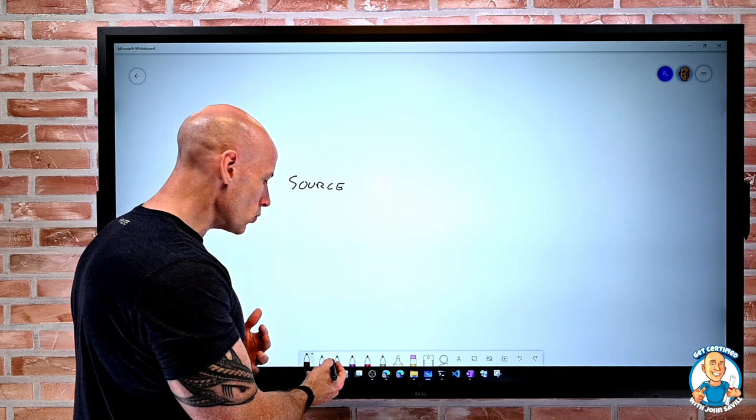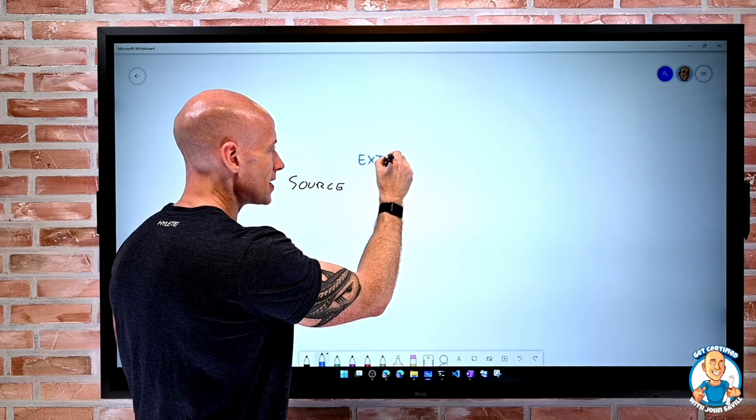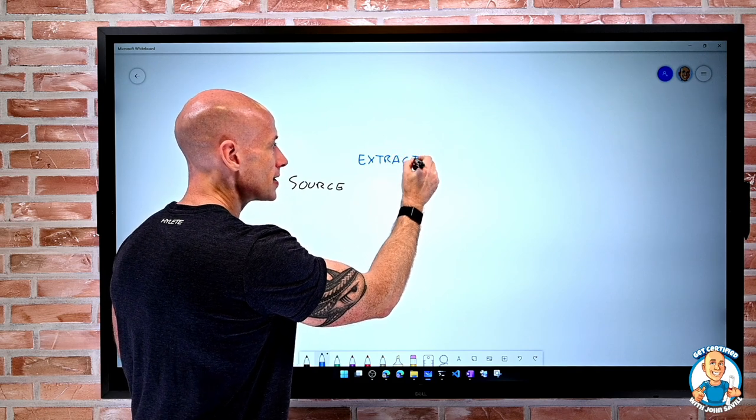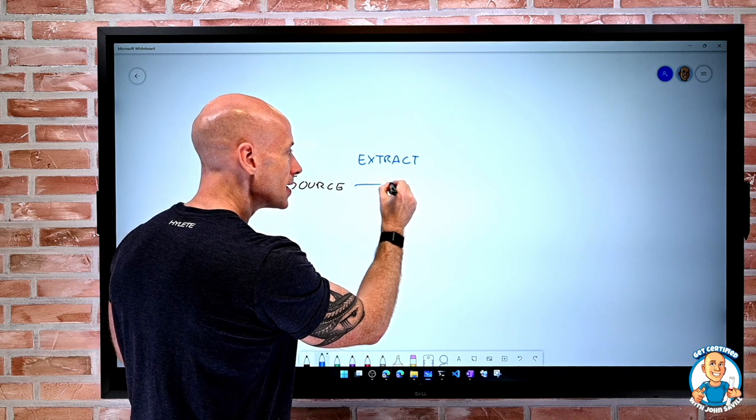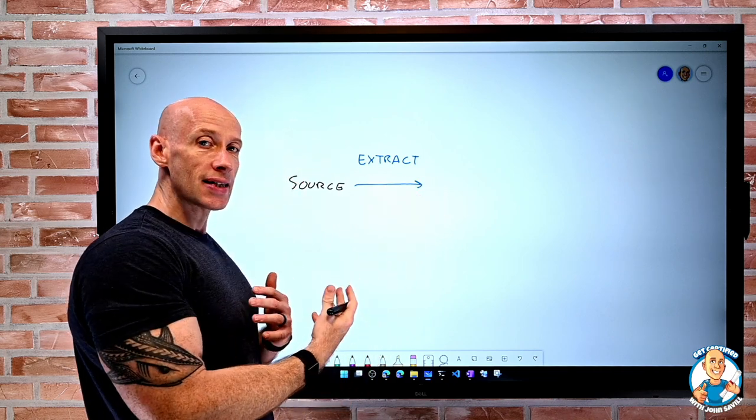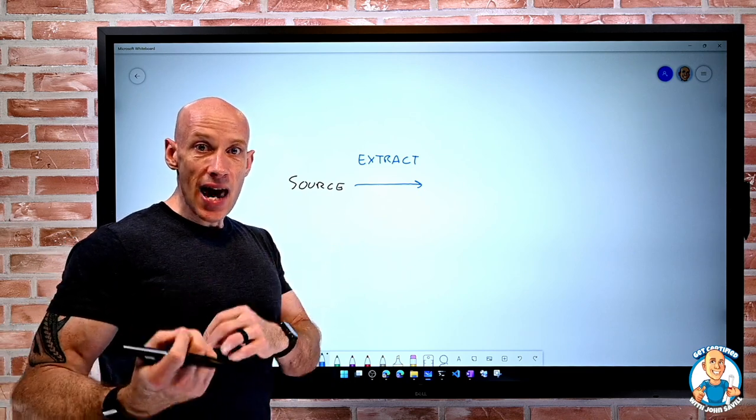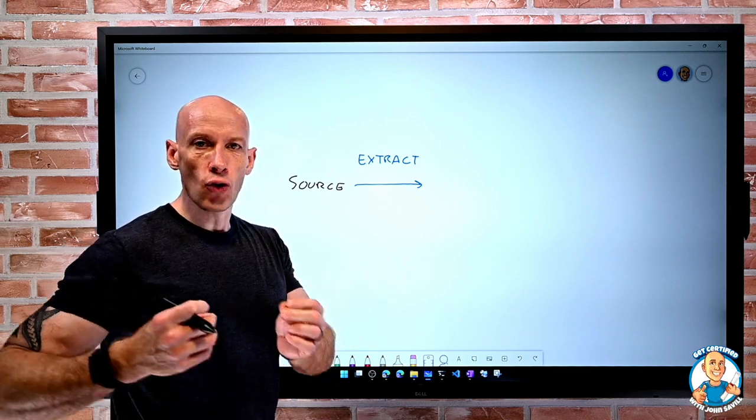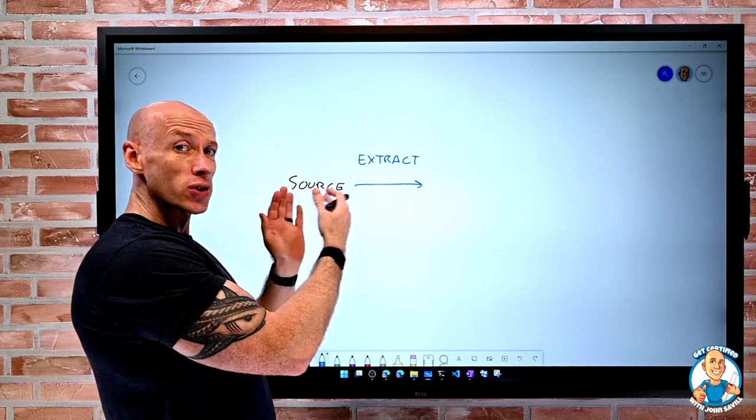Now, what I need to do is extract that data. So there's some mechanism to connect to that system and get out the data. Now, you may have heard the term ETL - extract, transform, load - which is all about that idea of source to sync.